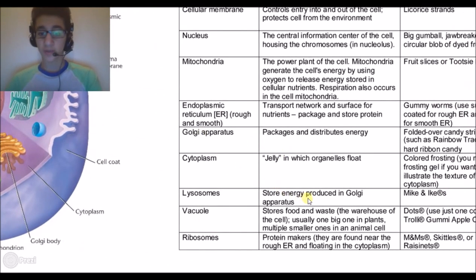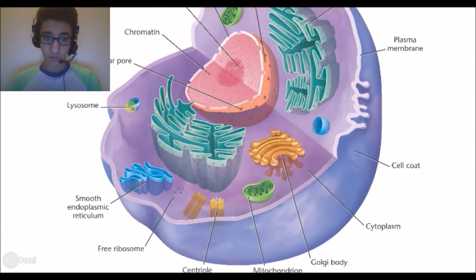The lysosomes store energy produced in the Golgi apparatus. The lysosomes are right here and they contain digestive chemicals.